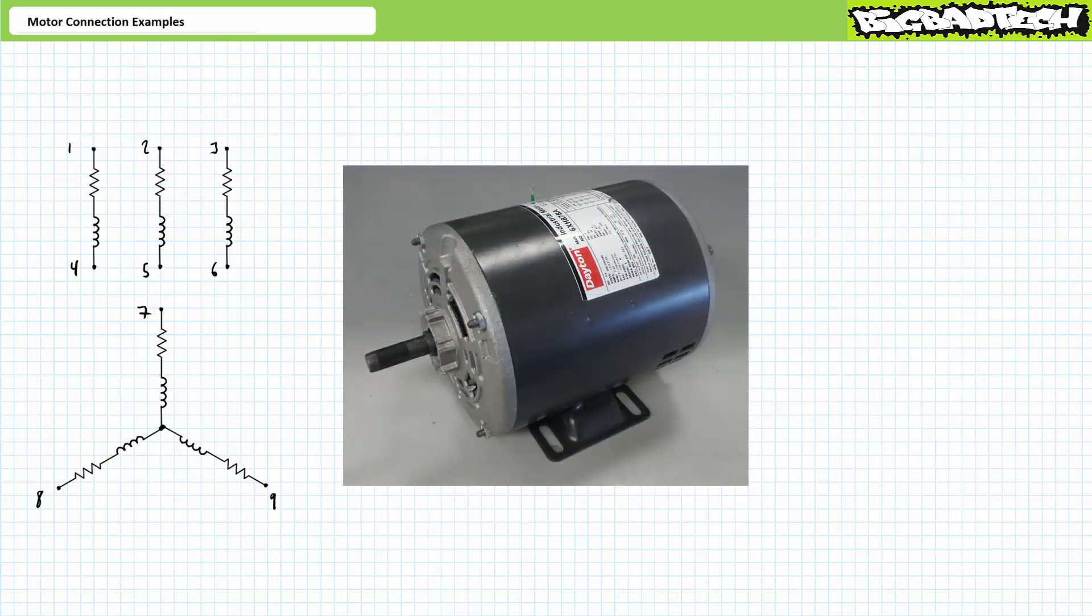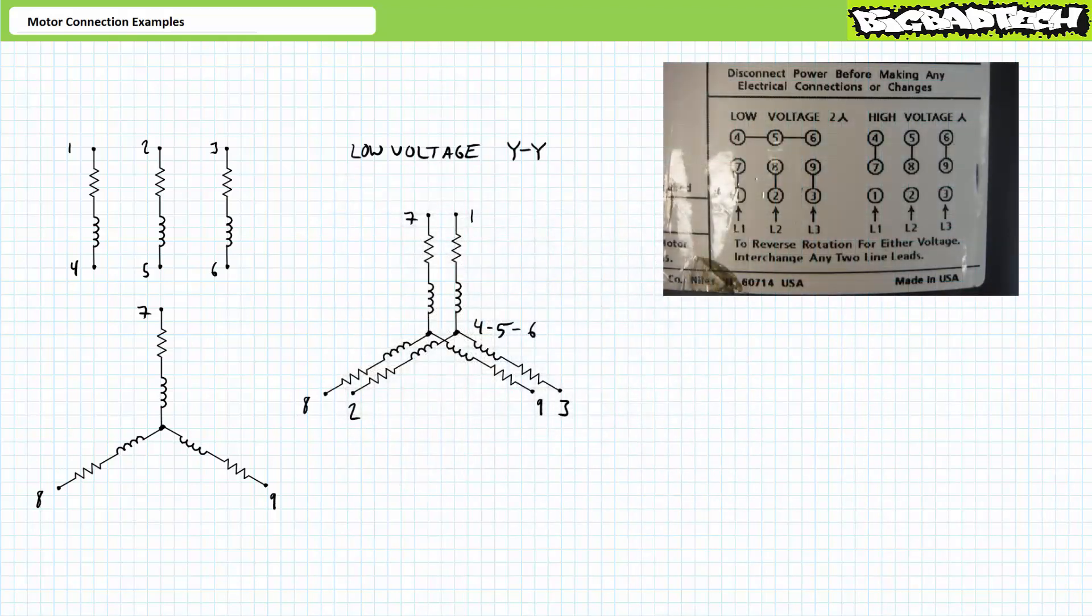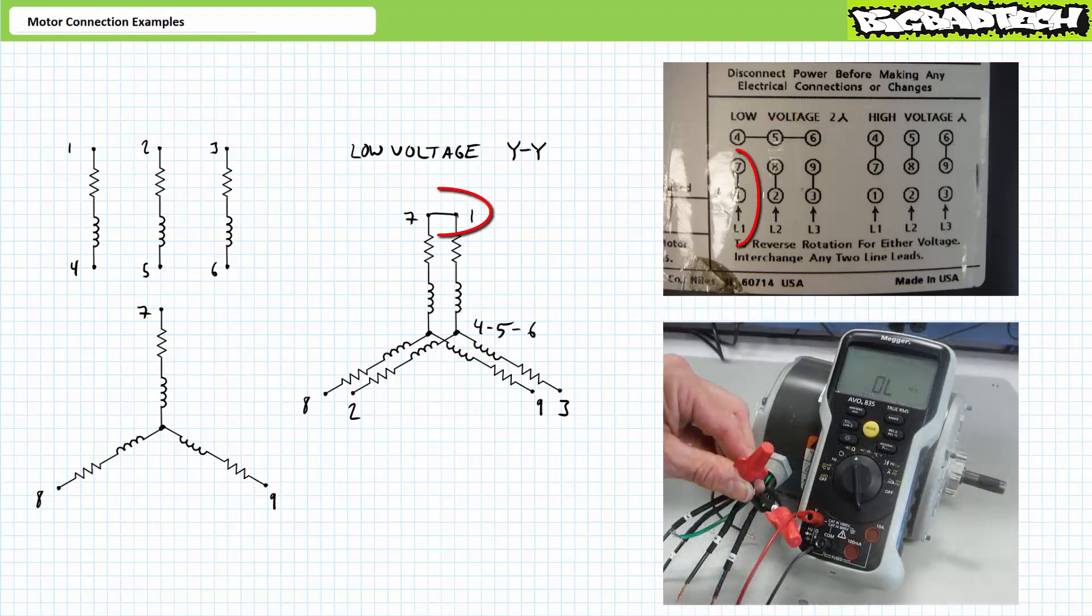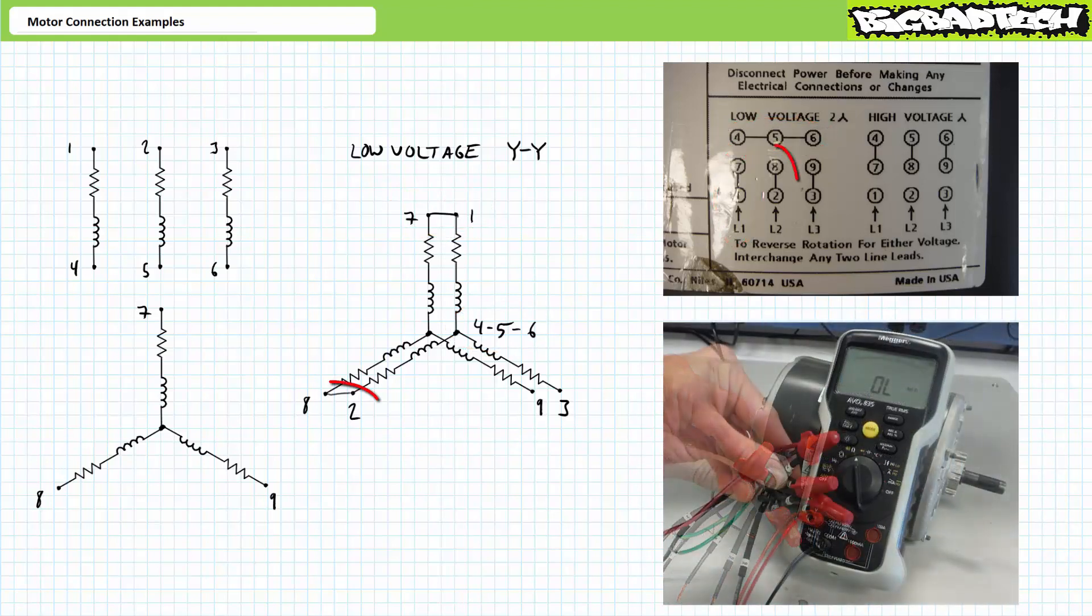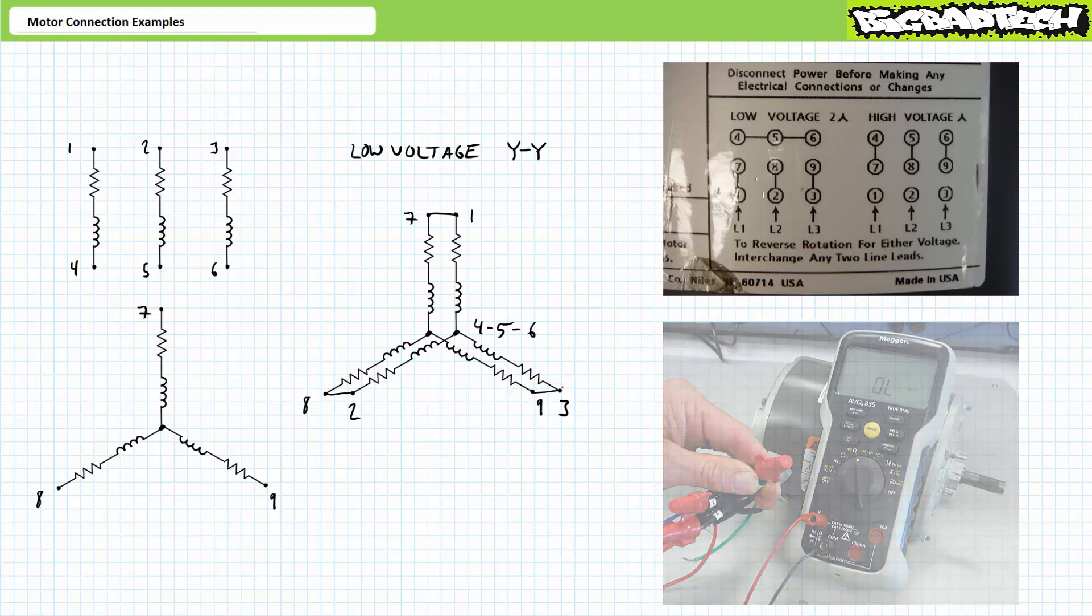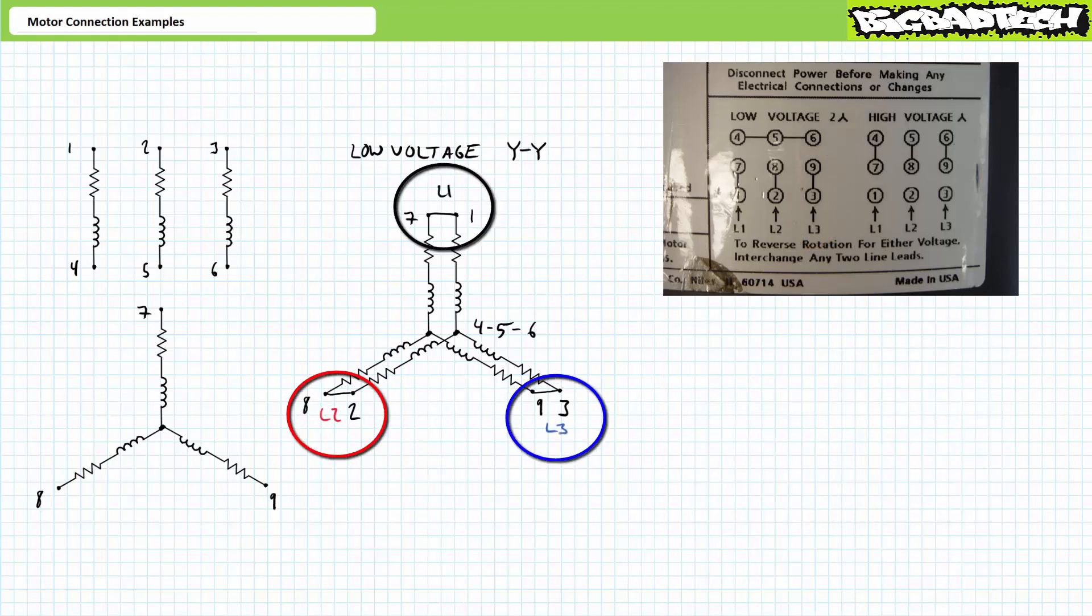This is indeed a nine-lead Y configured motor. Let's use the connection diagram to set it up in low voltage configuration. The motor connection diagram on the motor nameplate specifies a low voltage YY configuration requires leads four, five, and six to be tied together forming another Y. Then one is tied to seven, two is tied to eight, and three is tied to nine forming an almost overlapping double Y in parallel with one another. Primary lines L1, L2, and L3 would be connected to conjoined terminals one-seven, two-eight, and three-nine.